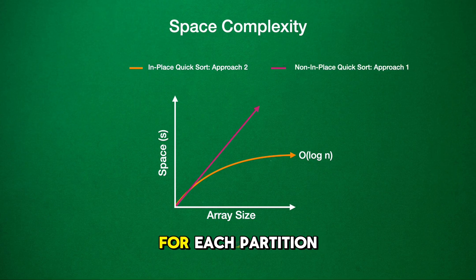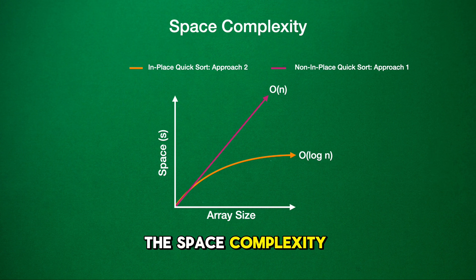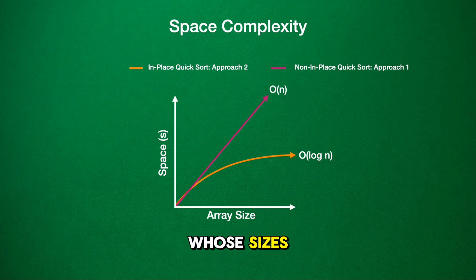For non-in-place versions of quick sort, which involve creating new arrays for each partition, the space complexity can be O(n). This is because each recursive call can potentially create new arrays whose sizes sum to the size of the original array, leading to a linear space requirement in the worst case.